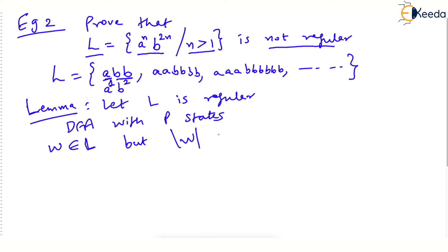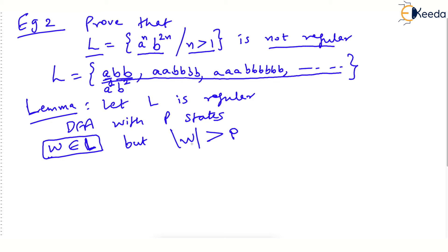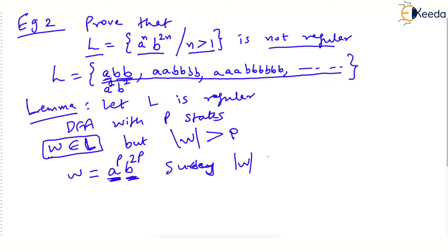The length of w must be greater than the number of states p. Here lies all the skill in the pumping lemma — which word will you consider? It should be one of the strings in language L, but the length of this word must be greater than p. Such a word can be a^p b^{2p}: there are p number of a's in the lead and 2p number of b's in the lag. Surely the length of w is 3p, which is greater than p.